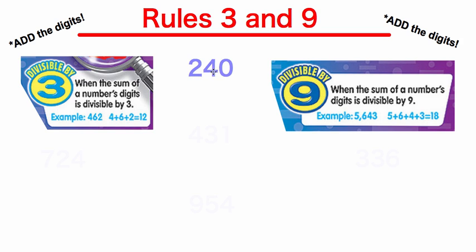Let's check some examples. Here we have the number 240. Is it divisible by 3 or 9? We add the digits: 2 plus 4 plus 0 is 6. Can 3 evenly go into 6? Yes, so 240 is divisible by 3. Can 9 evenly go into 6? No, because 9 is a bigger number than 6. So 240 is not divisible by 9.